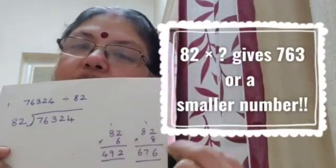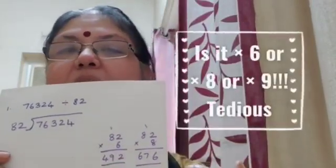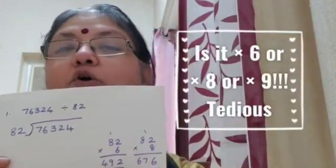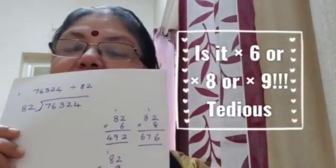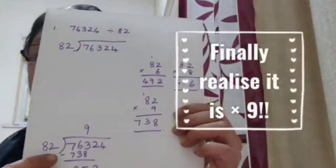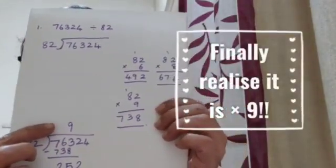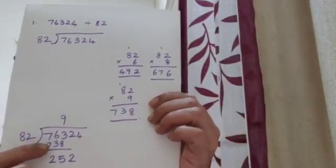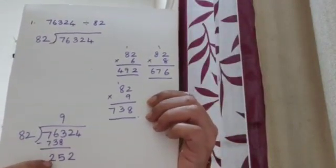So I go on to try: multiplied by 6, multiplied by 8 because 6 is too small, okay let me try 8, then I find out 82 multiplied by 9 and say okay fabulous. So now the quotient is 9 here and then I have this number and a remainder.